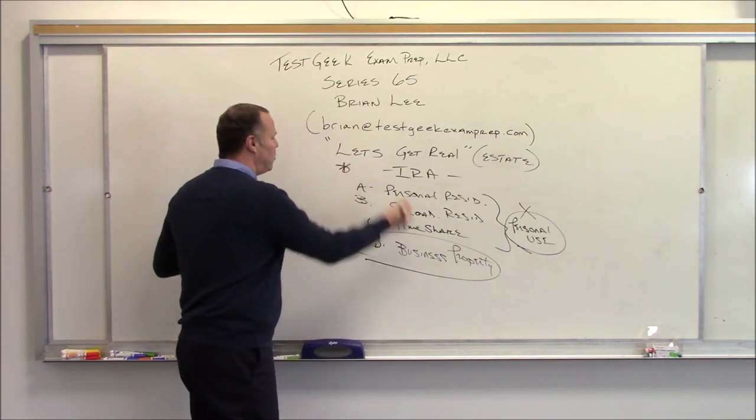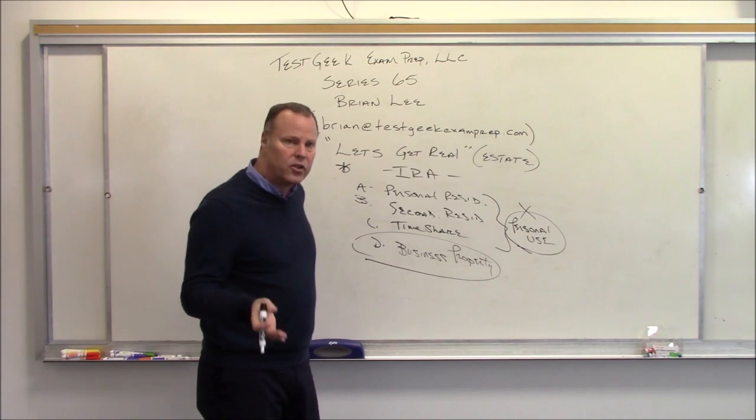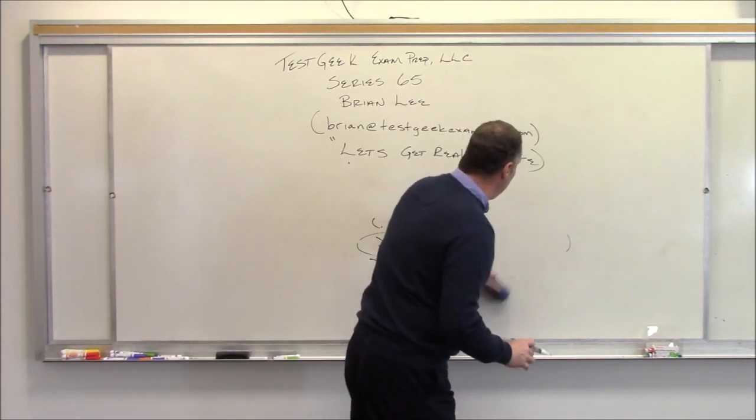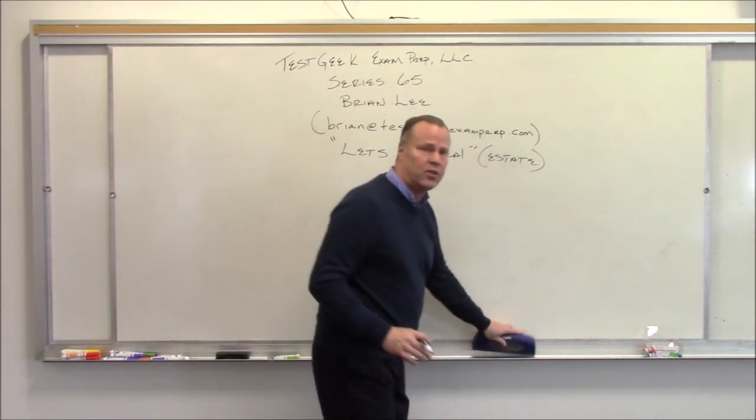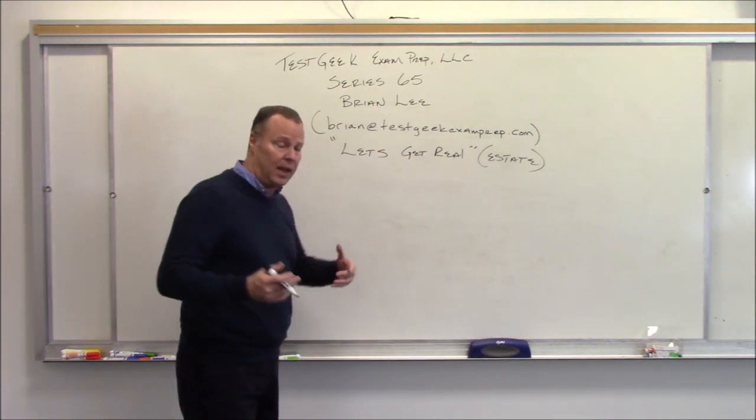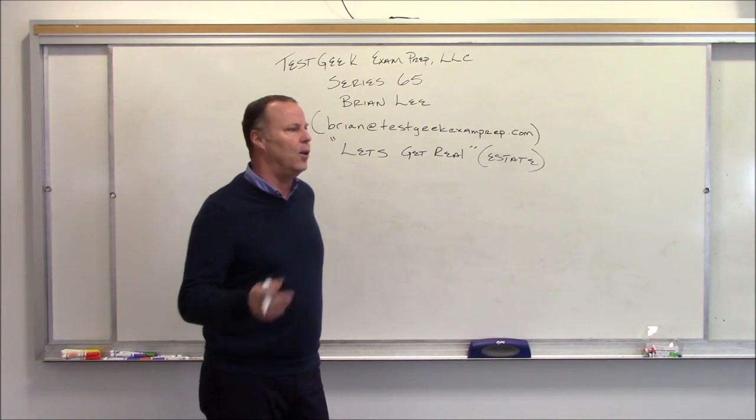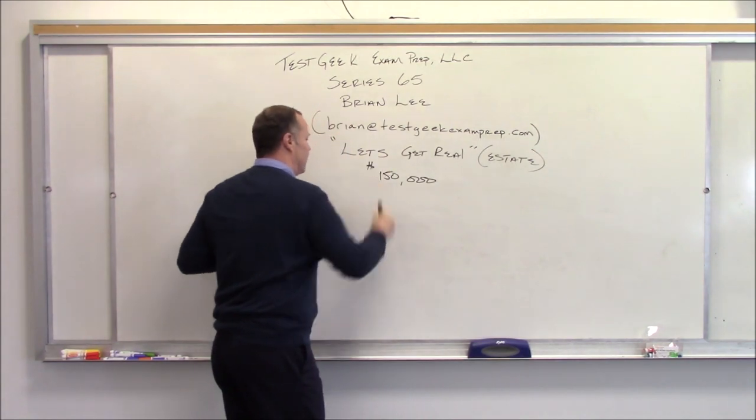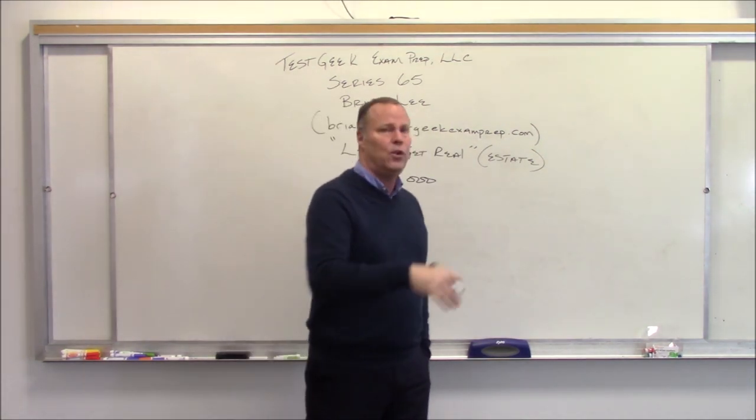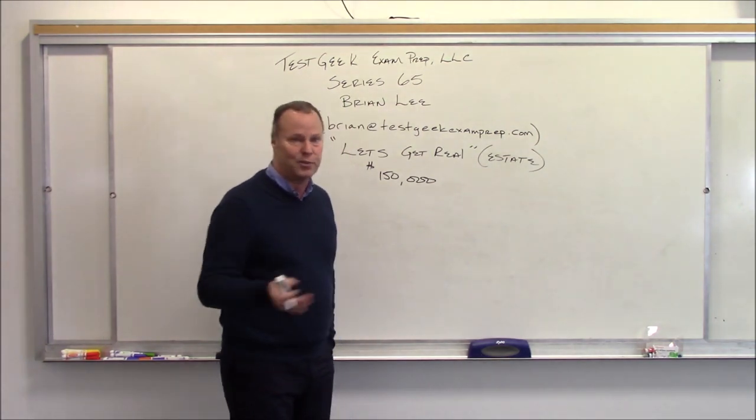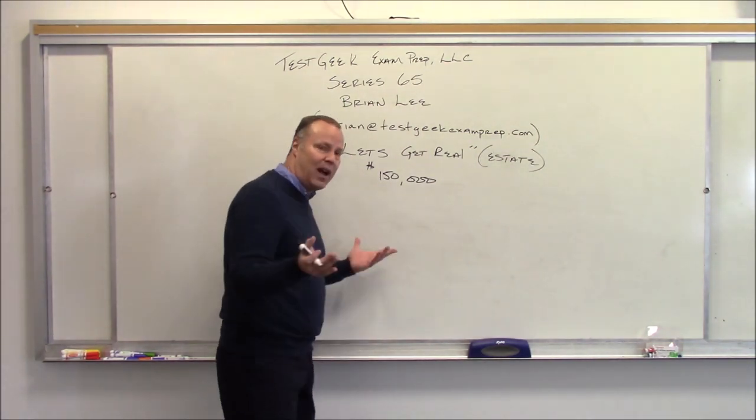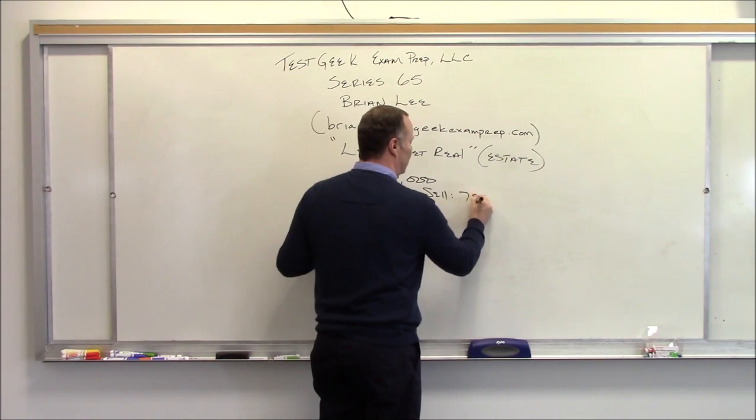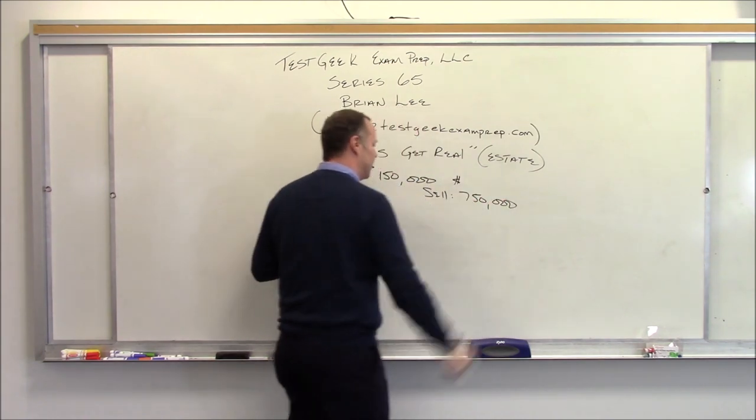That is the key IRS rule. You cannot have personal use of the property if you put it into your IRA. So don't be surprised if you may come across a real estate in an IRA question. Next, we find this quite often in some of our financial planning. We have an older couple. They bought their home in 1982 or something for $150,000. Now they're retired. They want to move to Florida or Phoenix, and they want to sell their house. So they sell their property today, 30 years later, 35 years later, for $750,000.